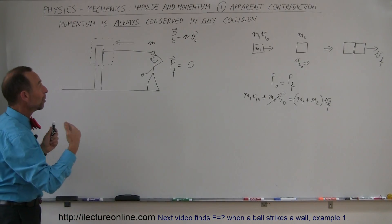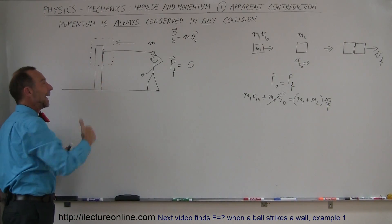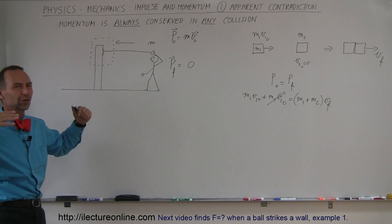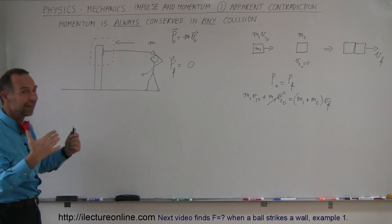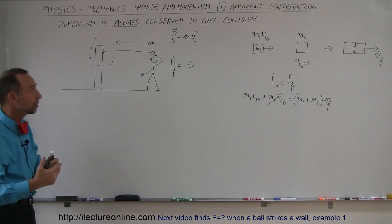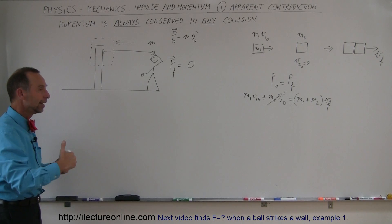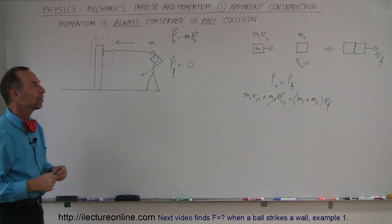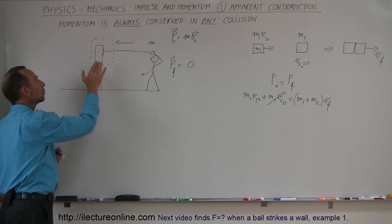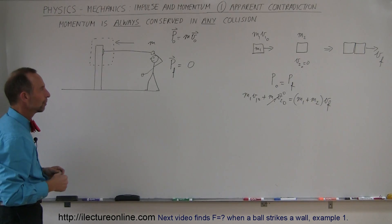And yes, the total momentum of the snowball and the Earth will be the same before and after the collision. But the Earth is so big with such an enormous mass that no change in velocity can even be seen or measured. There's just no way because the Earth is so much bigger than the snowball that at least it appears that momentum is not conserved.